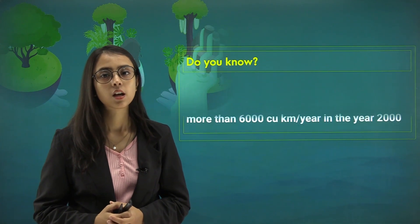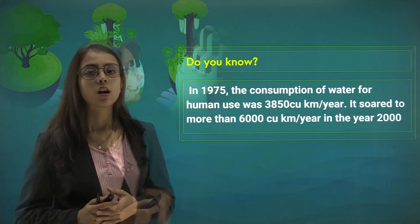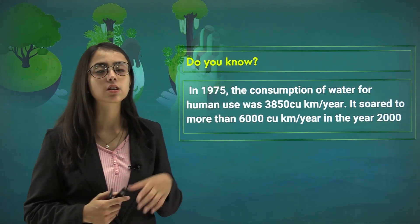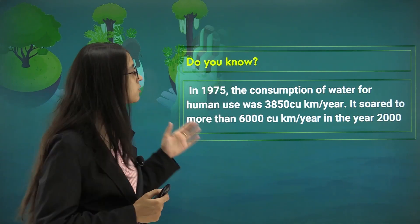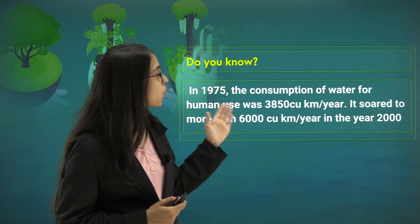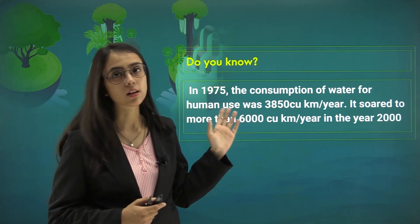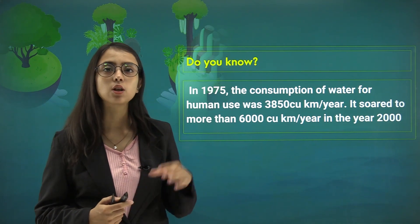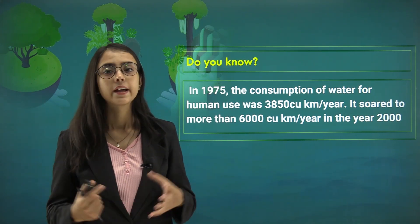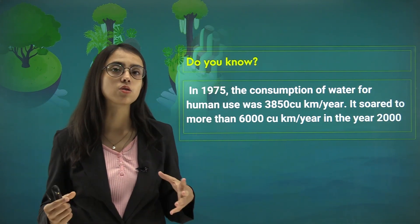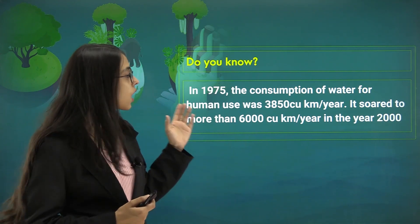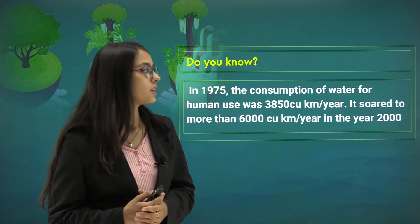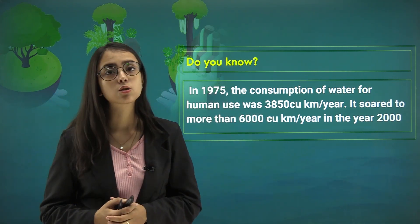Did you know? In the year 1975, the consumption of water for humans was only 3,850 cubic kilometres per year. It increased to 6,000 cubic kilometres per year in the year 2000.